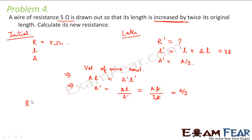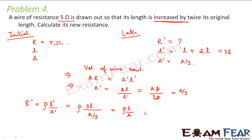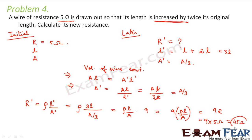Now we calculate the new resistance R dash using R dash equals rho times L dash divided by A dash. Substituting L dash as 3L and A dash as A by 3, this becomes rho times 3L divided by A by 3, which equals 9 times rho L by A. Since rho L by A is the original resistance R, we get R dash equals 9R, and 9 times 5 ohms gives the new resistance as 45 ohms.